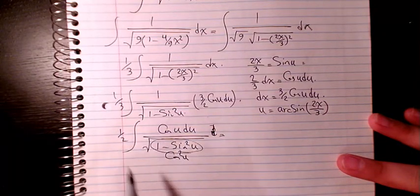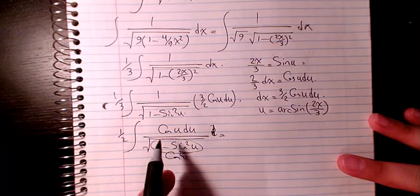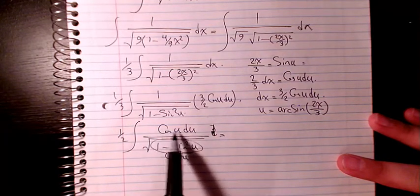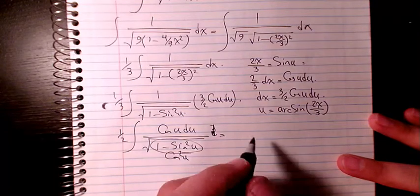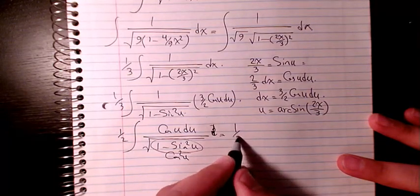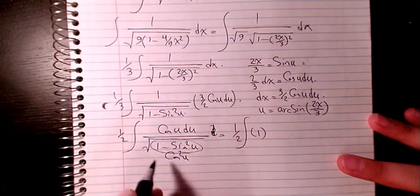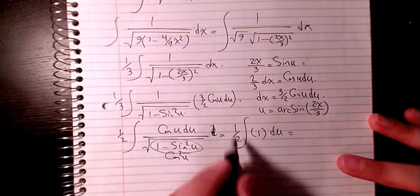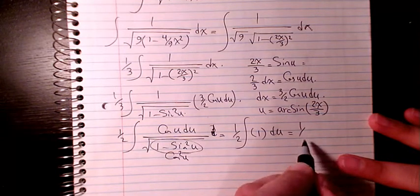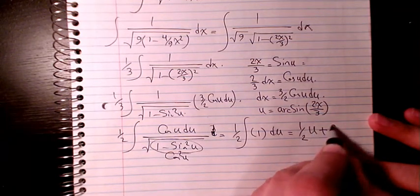And then since we have cosine u in the numerator, cosine divided by cosine is going to be just 1, so it's going to be 1 over 2. The whole thing is going to be 1 du. If you integrate it, it's going to be 1 over 2 u plus c.